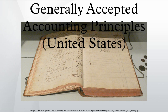Other organizations involved in determining United States accounting standards include the Governmental Accounting Standards Board, formed in 1984, and the Public Company Accounting Oversight Board.